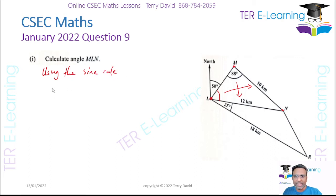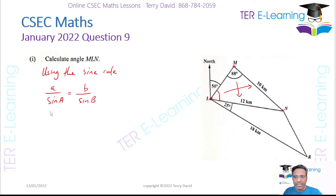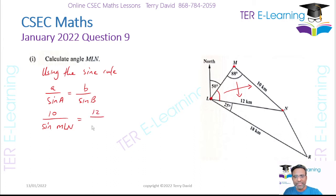Using the sine rule, which looks like A over sine A equals B over sine B, we can choose any side we want. So: 10 over sine of angle MLN equals 12 divided by sine of 88 degrees.